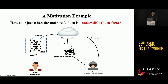However, in some scenarios, accessing the original main task samples is not realistic, such as private training data. Consider a clean model that has been released by the developer. An attacker can download or steal the model, inject backdoors into it, and then release it again. But how to inject backdoors when the main task data is inaccessible — that is the data-free scenario considered by us.